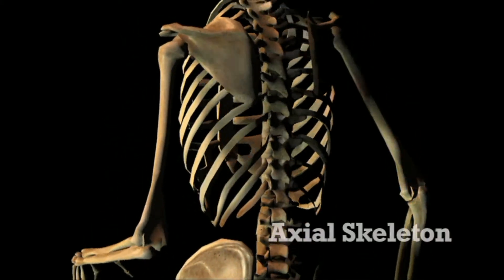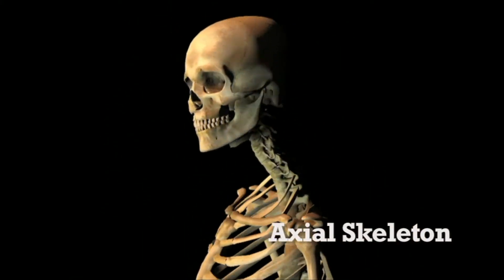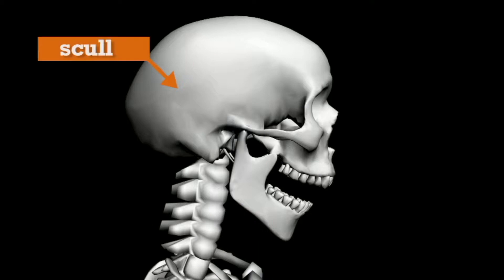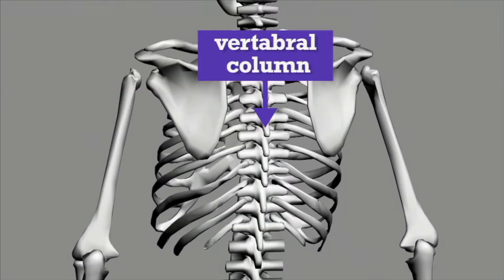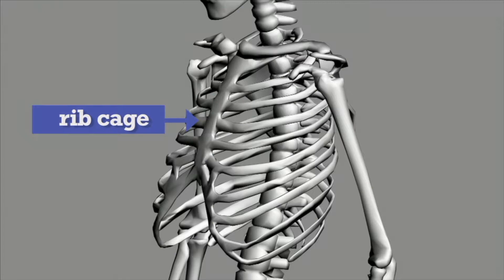The first part is called the axial skeleton. The axial skeleton consists of the skull, the vertebral column, and the ribcage.